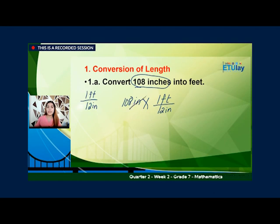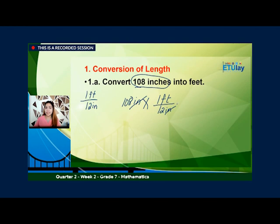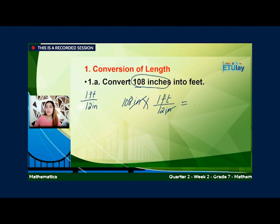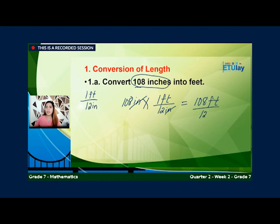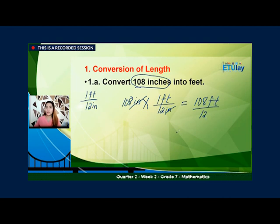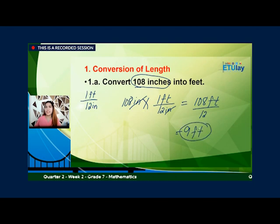Take note na yung pagsulat ng fraction of the factor, ang unit for the denominator ay dapat katulad ng given natin, which is inches. So we have 108 inches times 1 foot over 12 inches. Ngayon, eliminate na natin yung unit na inches. So that would be equal to 108 feet over 12, and that would be 9 feet. So this is the final answer.